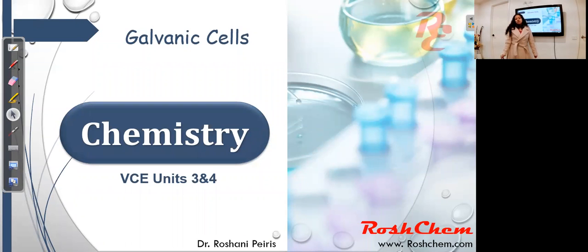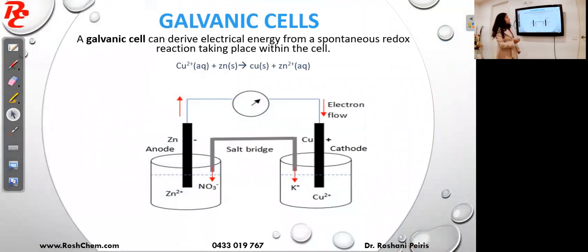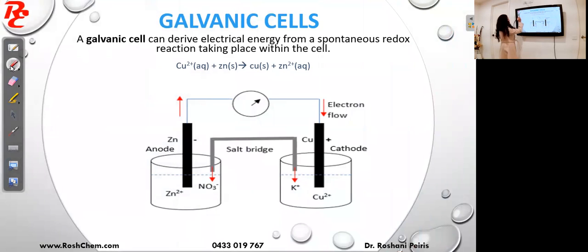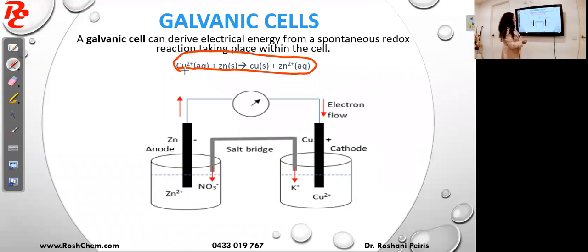Welcome to Rush Time summary videos. In this video I'm summarizing the lesson on galvanic cells. A galvanic cell can derive electricity using a spontaneous redox reaction. The reaction written here — copper 2+ and zinc giving copper and zinc 2+ — is a spontaneous redox reaction, and I have set up a galvanic cell using this reaction.